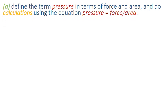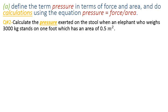Let's do a slightly trickier question here. Calculate the pressure exerted on the stool when an elephant who weighs 3000 kg stands on one foot, yes, which has an area of 0.5 meter square. Apparently it might seem that this is pretty much similar to the earlier question but it's not. The reason it's not the similar question is because we are not given force here but we are given mass.